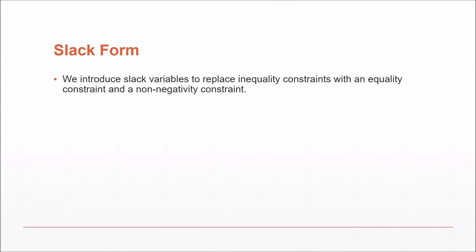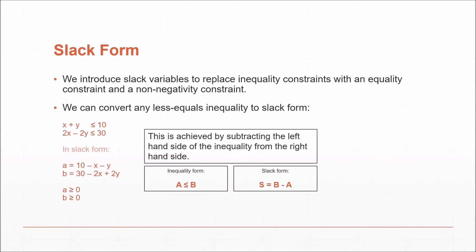We introduce slack variables to replace inequality constraints with equality constraints and a non-negativity constraint. We get a slack variable for every inequality we have, arrived at by subtracting the left-hand side of the inequality from the right-hand side. This gives us two new slack variables, a and b. We can then add non-negativity constraints for those slack variables.